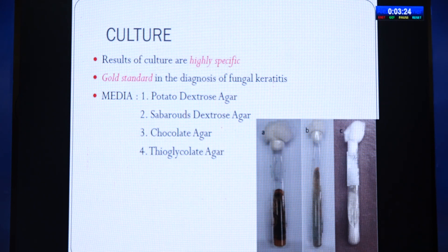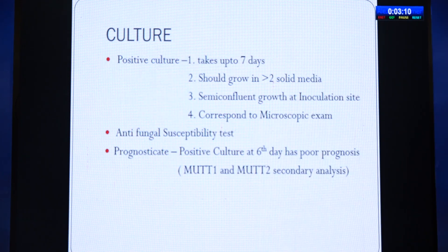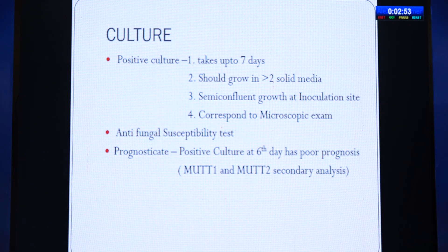Culture is the gold standard for diagnosis of fungal keratitis — highly specific, allowing species-level identification. Commonly used media include Potato Dextrose Agar (PDA), Sabouraud Dextrose Agar (SDA), chocolate agar, and thioglycollate broth. Fungal growth takes around seven days; to discard as no growth, wait at least two weeks. Fungus should grow on two solid media at a semi-confluent inoculation site. In the MUTT-1 and MUTT-2 trials, a positive culture at day 6 was associated with poor prognosis — useful as a prognostic factor.